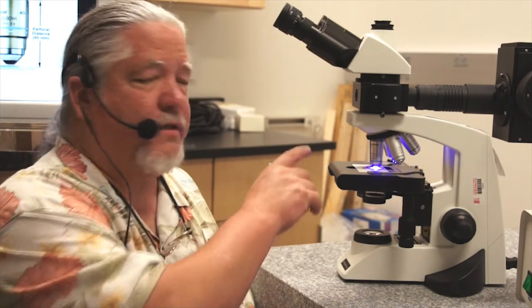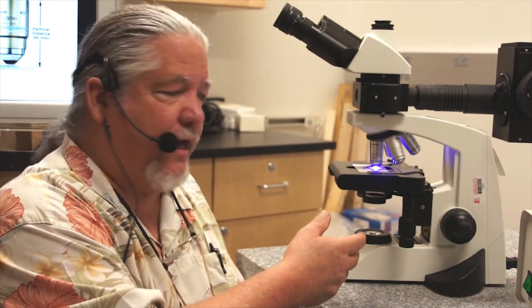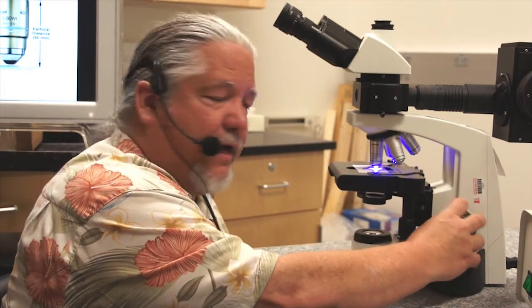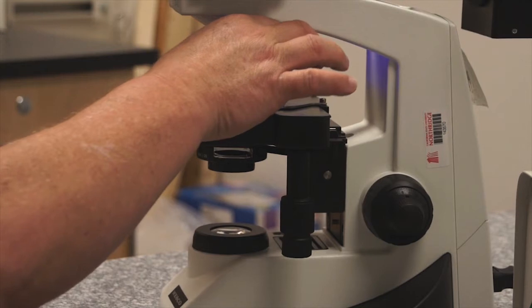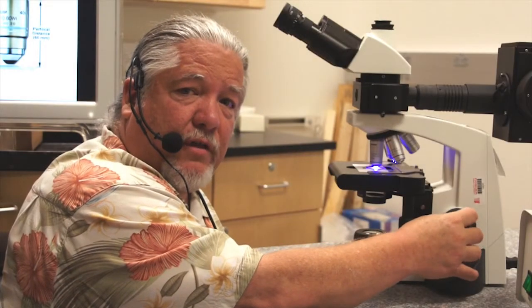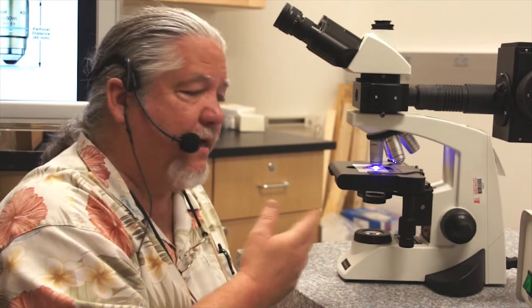Another important concept on the microscope is par-focality. When you're looking through a 10x objective and you're in focus and want to go to another magnification, it's not necessary to lower the stage. You can be in focus at 10x and go to 20x or 40x and be within a half turn of the fine focus. This is called par-focality and is available on most modern microscopes.